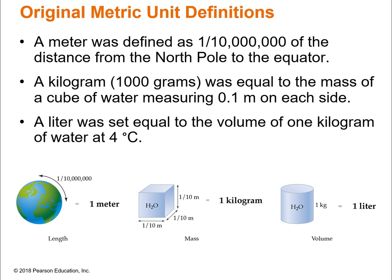Originally, metric unit definitions were based on physical distances and things. The distance from the North Pole to the equator — one ten-millionth of that was a meter. The kilogram was equal to the mass of a cube of water. We've kind of moved away from that now, but that's the original history. You won't really need to know all of it — just giving you a little background about the metric system.